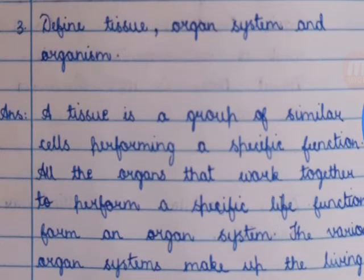Question 3: Define tissue, organ system, and organism. Answer: A tissue is a group of similar cells performing a specific function. All the organs that work together to perform a specific life function form an organ system. The various organ systems make up the living organism.